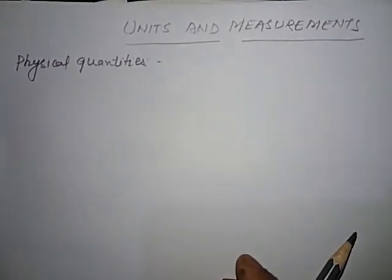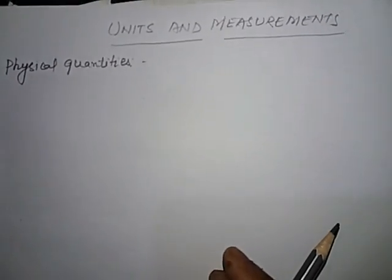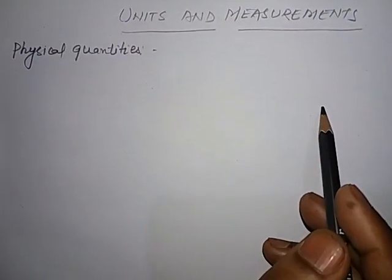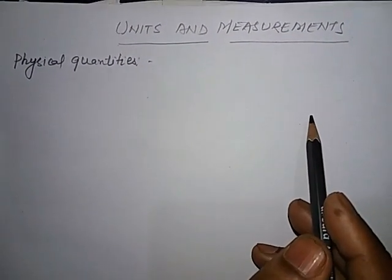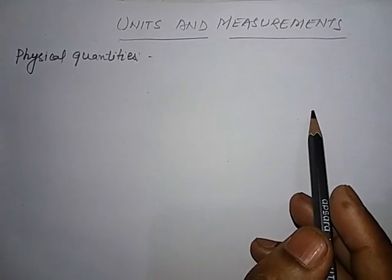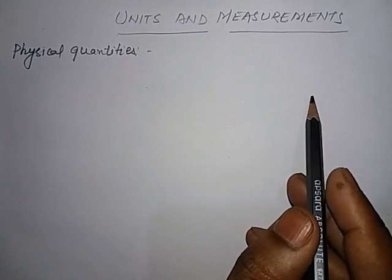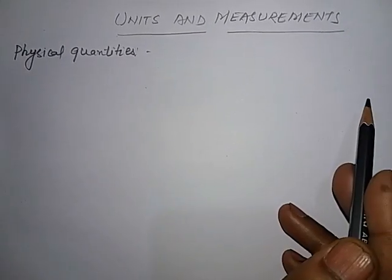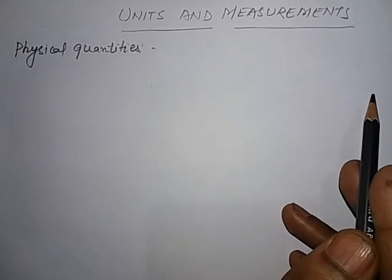Physical quantities are all those quantities which can be measured directly or indirectly, in terms of which the laws of physics can be expressed. What are physical quantities? Quantities which can be measured are called physical quantities.